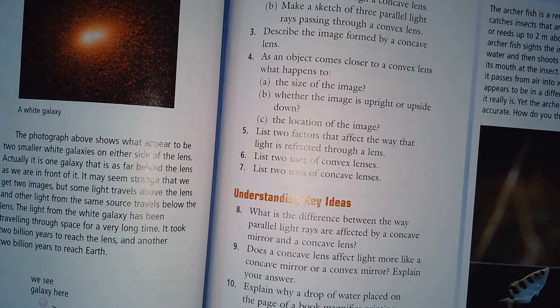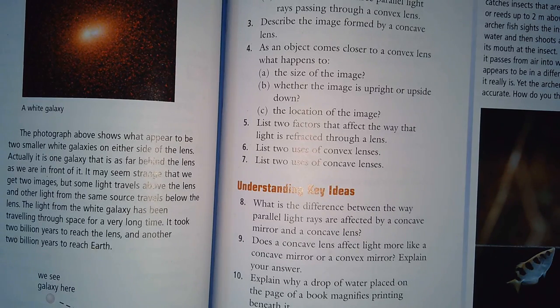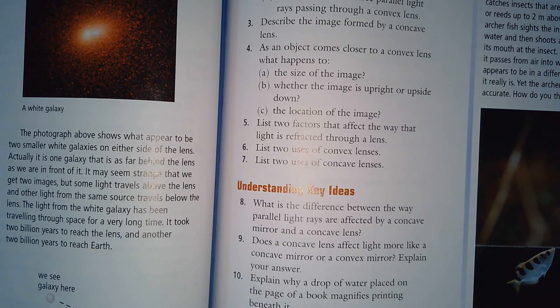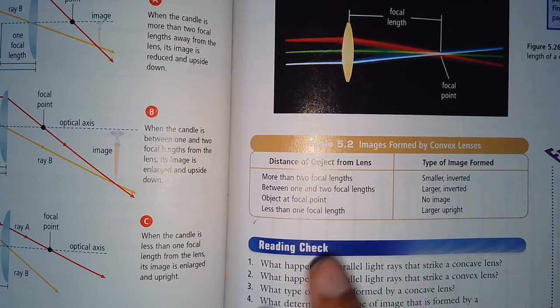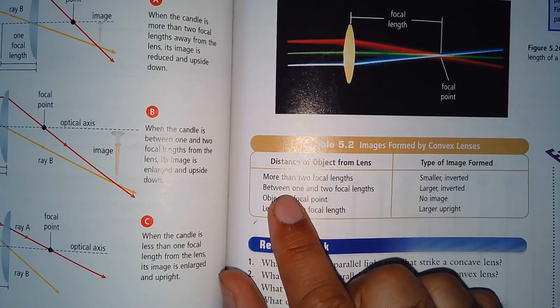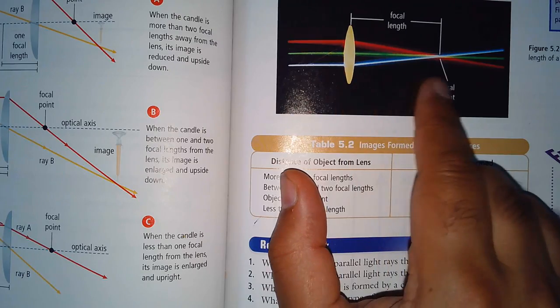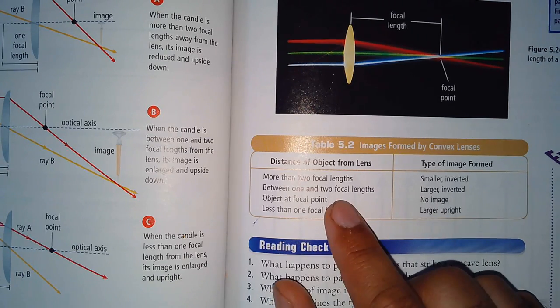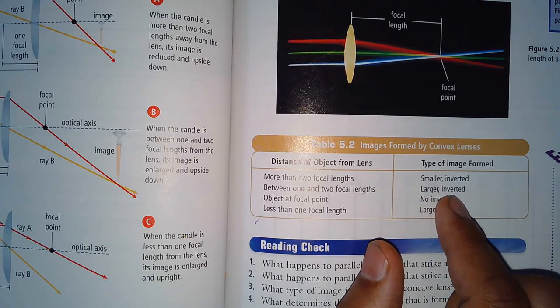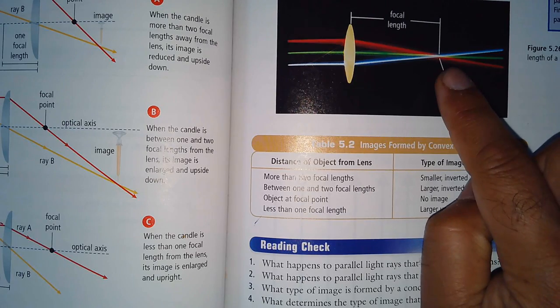The next one talks about the convex lens, which is not as clear as a concave lens. It says as an object comes closer, what happens to the size? Describe whether the image is upright or upside down and the location of the image. Here's a table that describes basically what happens. When you're beyond two focal lengths—a focal length is defined as from the center of the lens to the focal point—you have an image that's smaller and inverted. If it's between one and two, it's larger and inverted.